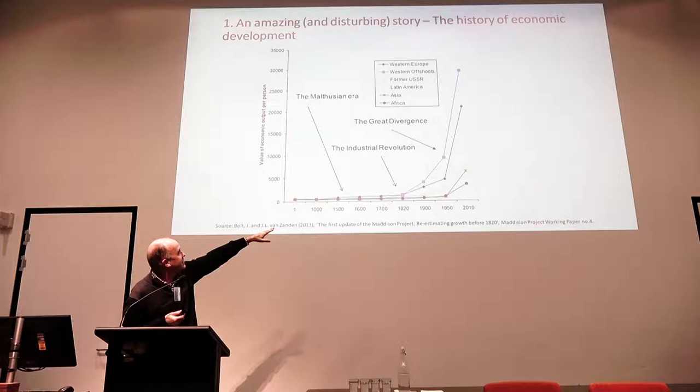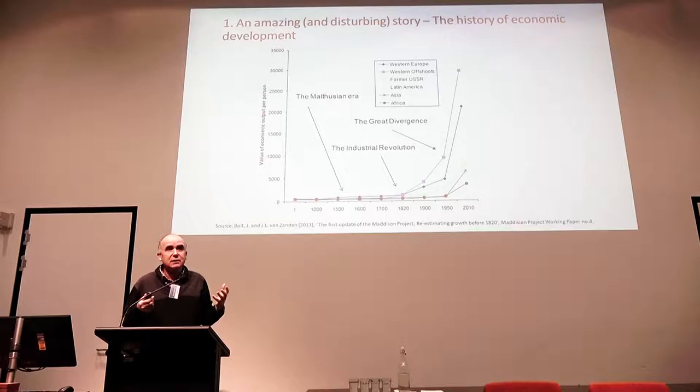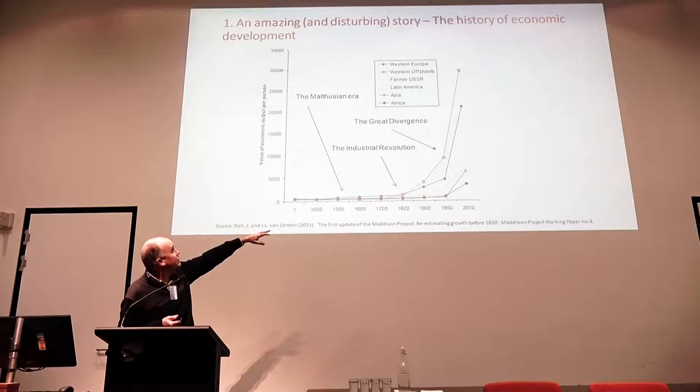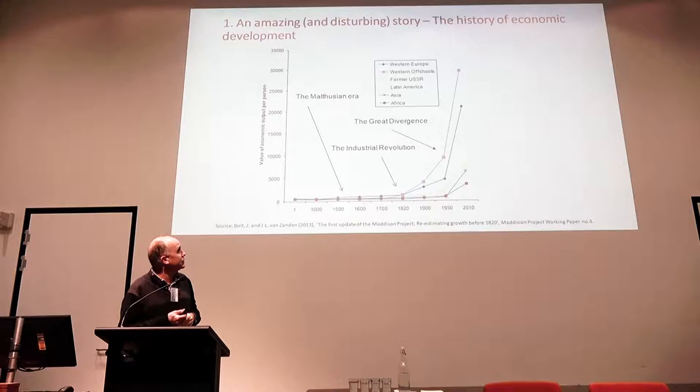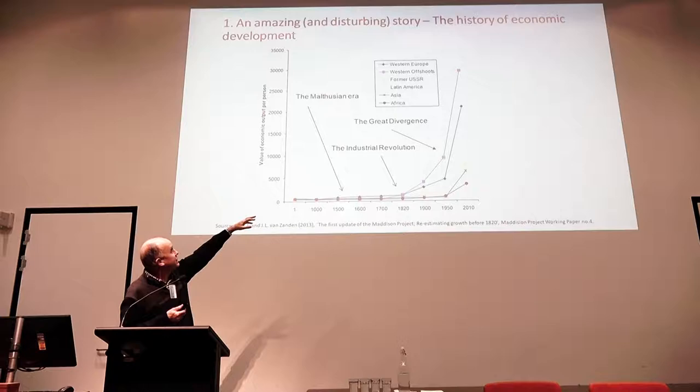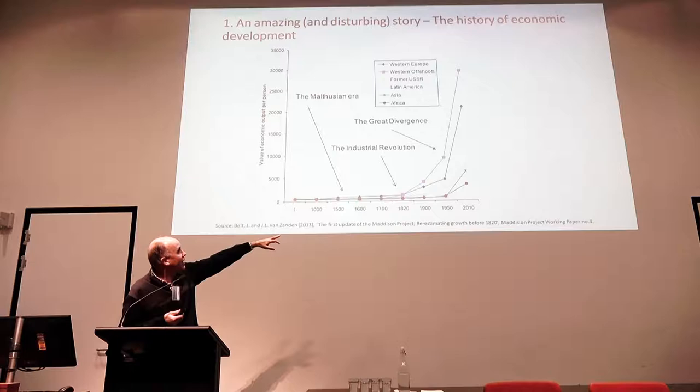The third stage, which is the stage we're in at the moment, is what's commonly referred to as the Great Divergence. The Great Divergence is this period where the rich parts of the world — Western Europe and the Western offshoots — have seen material standards of wellbeing increase at an astronomical rate in the last 150 years or so. Whereas living standards in the other four parts of the world — former USSR, Latin America, Asia and Africa — have increased but with a delay and much more slowly.